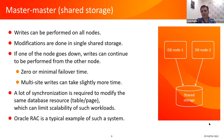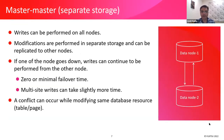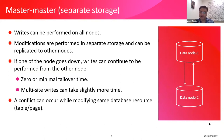Oracle RAC is a typical example of such a system. Then comes another kind of multi-master solution where we have separate storage for each of the nodes and writes can be performed on all the nodes. Modifications are performed in separate storage and can be replicated to other nodes. As you can see in this diagram, wherever the data is written — either on node 1 or on node 2 — it can be replicated to the other node. And even if one of the nodes goes down, writes can still continue from the other node.